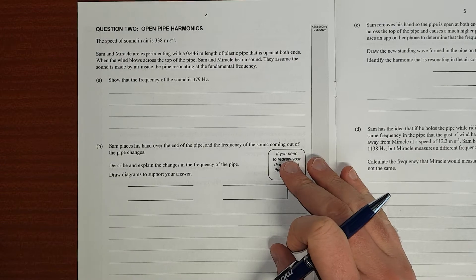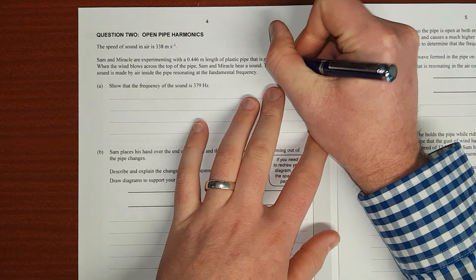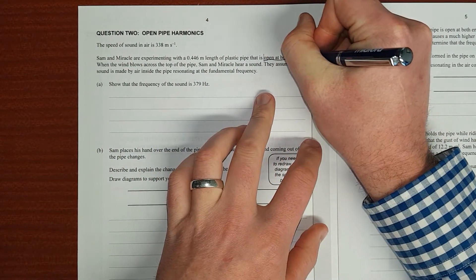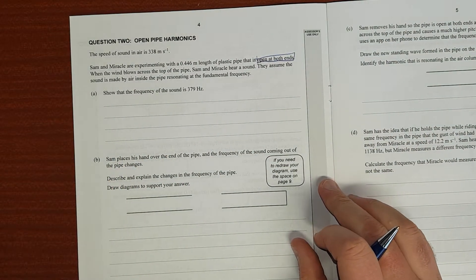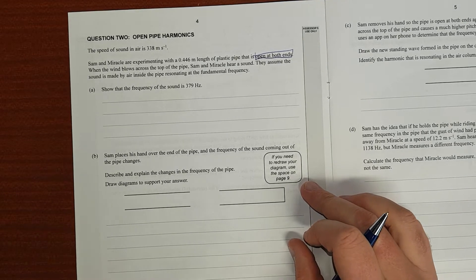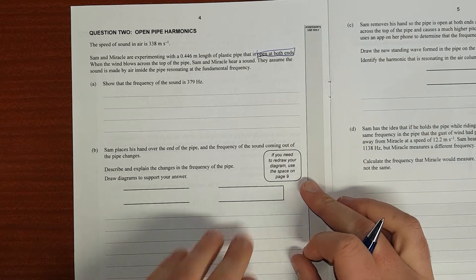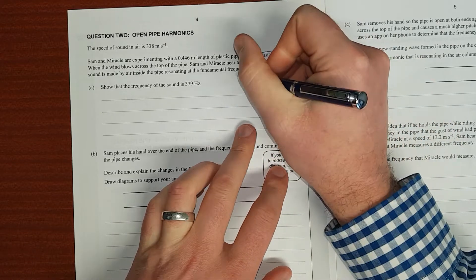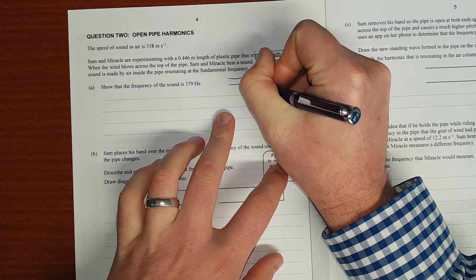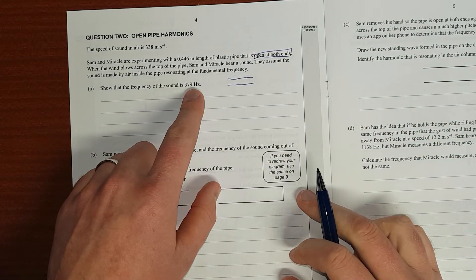So, Sam and Michael are experimenting with a 0.446 meter length of pipe that is open at both ends. We'll just circle that. When the wind blows across the pipe, Sam and Michael hear a sound. They assume that the sound is made by the air inside the pipe resonating at the fundamental frequency. This is what's called Helmholtz resonance.